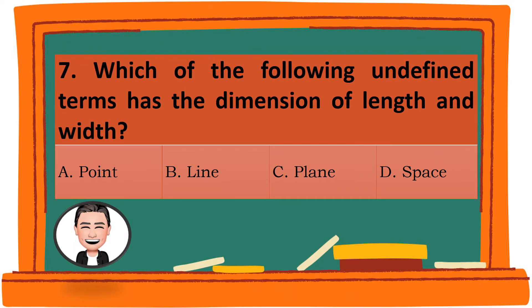Question 7. Which of the following undefined terms has the dimension of length and width? A. Point. B. Line. C. Plane. D. Space. The correct answer is C. Plane.